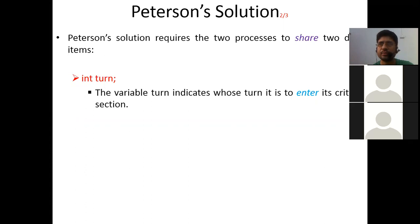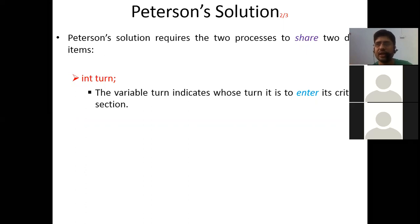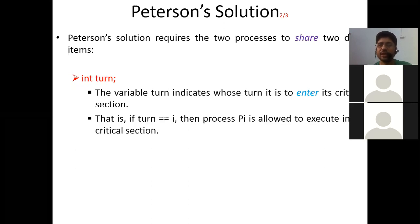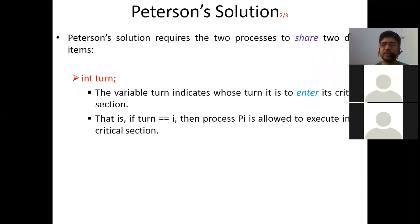Similarly, P1, before entering its critical section, asks P0 by putting the turn value as I. This is just like the concept of 'after you.' If turn equals I, then process PI is allowed to execute in its critical section. For example, if I is 0 and turn is 0, then P0 is allowed to execute in its critical section.